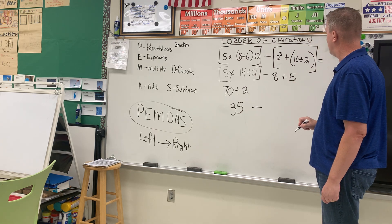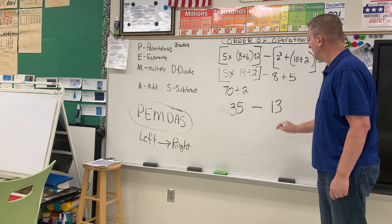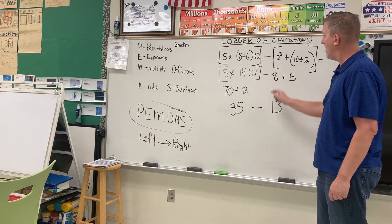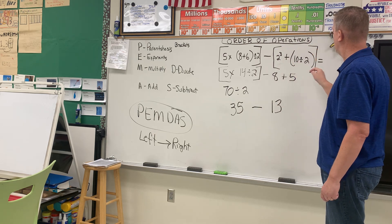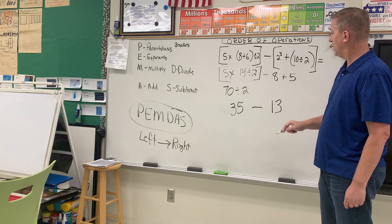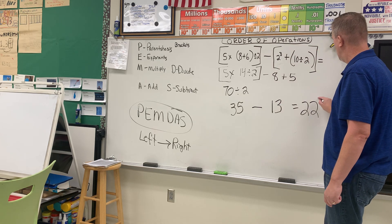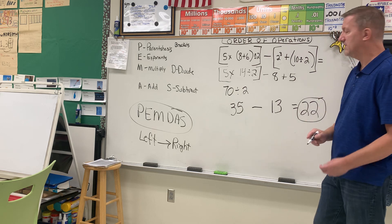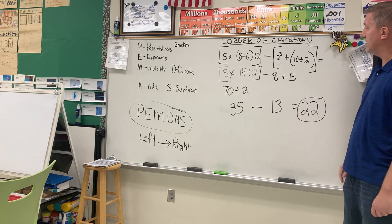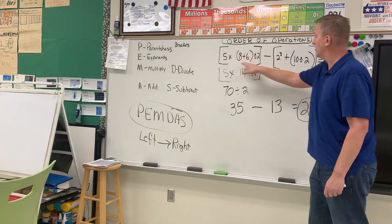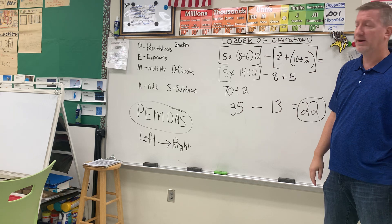So I have 5 there. 8 plus 5 is 13 on this side. Now I can come back to my subtract symbol because I finished the brackets on both sides. So then when I subtract, it comes out to 22. And that would be your final answer — 22 is the answer to this equation using the order of operations.